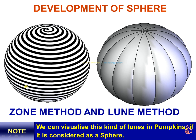In the zone method, you segment and cut the sphere into a number of slices. Each slice can be assumed as one frustum of a cone, developed under the radial line method. By joining all those segments in a proper sequence, you get the sphere — that is the zone method. The lune method is something similar; the pumpkin is the best example for the lune. One segment of the pumpkin shape is called a lune.